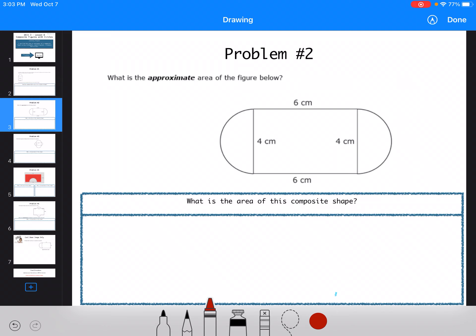The next one they want the area of the composite shape. So I have a rectangle and a circle. So 6 times 4 is 24 centimeters squared. So then I have to find the area of my circles. So I have pi times the radius squared. So 3.14 times, it's not 4, it's going to be 2, squared.